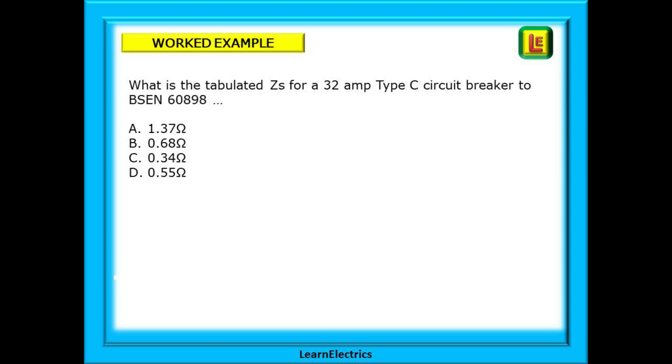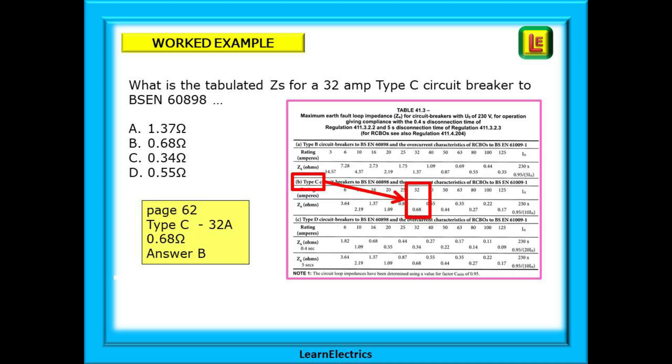Here's an example question. What is the tabulated ZS for a 32 amp type C circuit breaker to BS EN 60898? You need to be on page 62 looking at table 41.3. Find C type on the left of the table. Then find 32 amps and below that is the answer 0.68 ohms. So choose answer B.